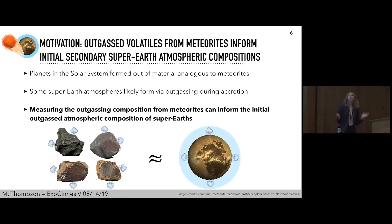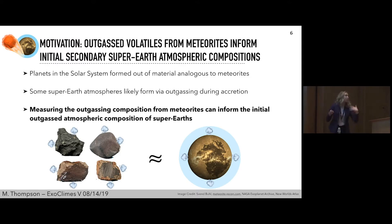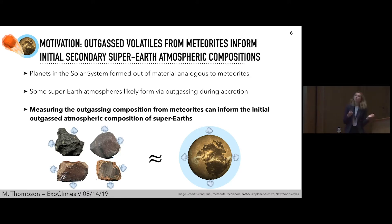With that in mind, I'm now going to motivate why we would want to measure the outgassed volatiles from meteorites, and how this can help inform these secondary super-earth or lower mass planet atmospheric compositions. We believe in general that planets in our solar system formed out of material that is approximately analogous to meteorites. And as we just discussed, some super-earth atmospheres are likely to form through outgassing during accretion. Therefore, if we measure the outgassing composition from meteorites, this can help inform the initial outgassed atmospheric compositions of super-earths.